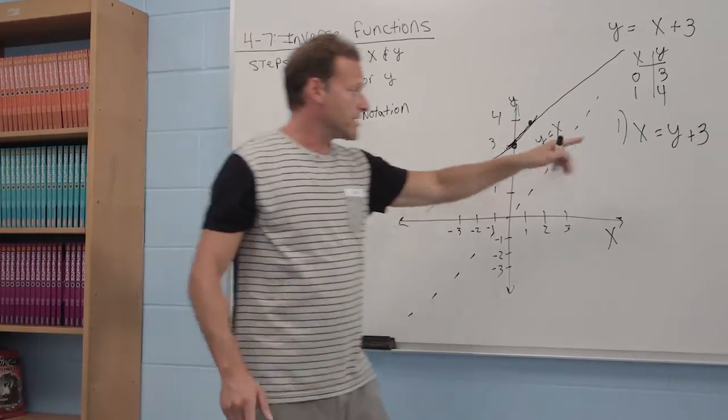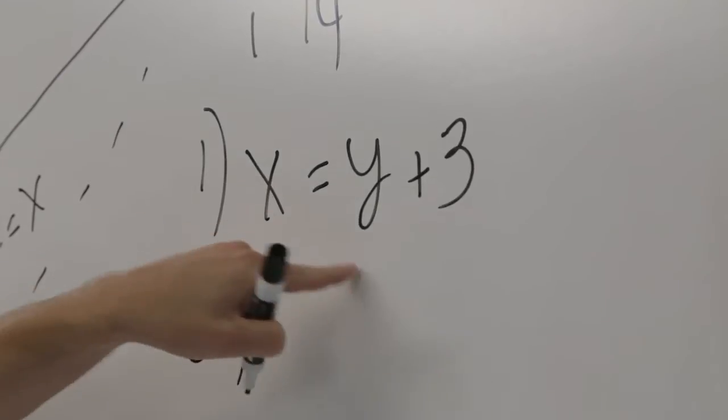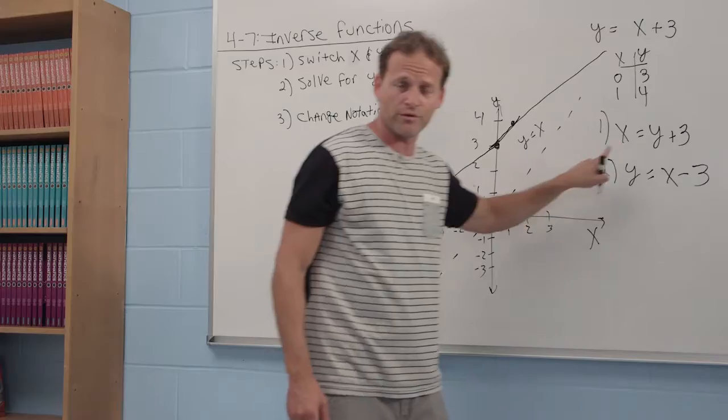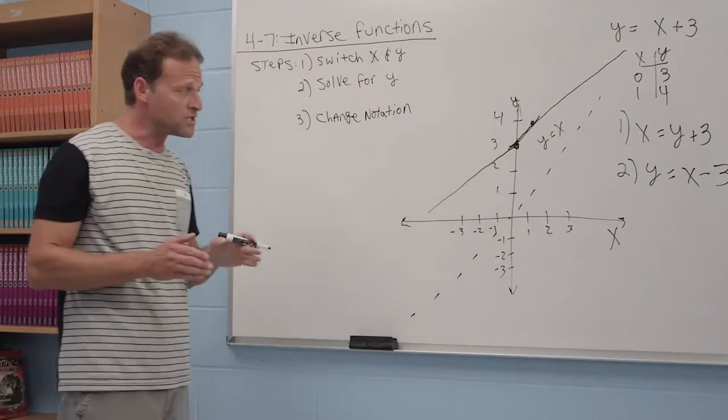Solve for y. We know how to do the algebra already. I'm just going to quickly write y is equal to x minus 3. Subtract 3 from both sides and you get y is equal to x minus 3.